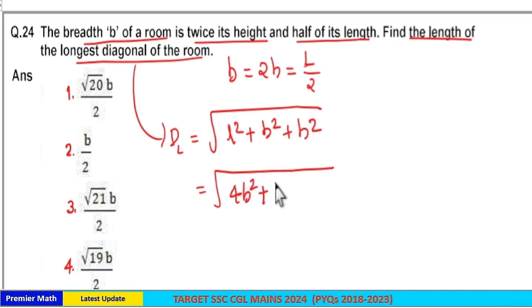B square is B square plus H square. H is equal to B by 2, so H square is equal to B square by 4.